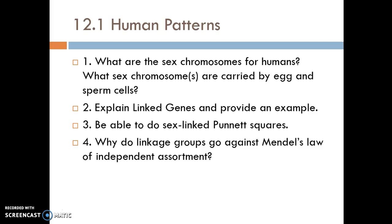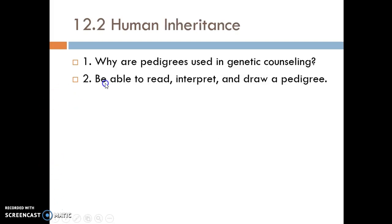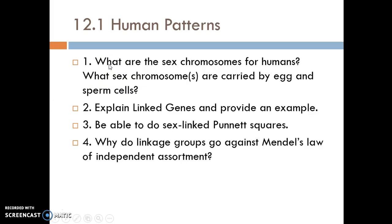The first question: what are the sex chromosomes for humans, and what sex chromosomes are carried by egg and sperm cells? The sex chromosomes for humans are XX for female and XY for male. The egg can only carry an X chromosome, and the sperm can carry either an X or a Y chromosome. If a couple is having a child, the child's sex is actually determined by the sperm, whether it has the X or the Y.